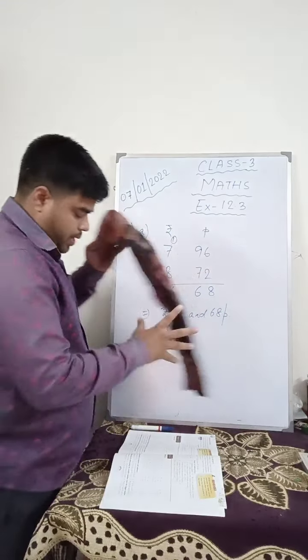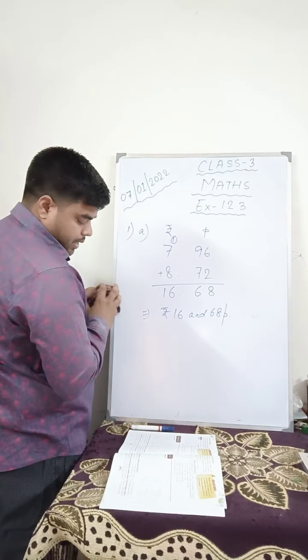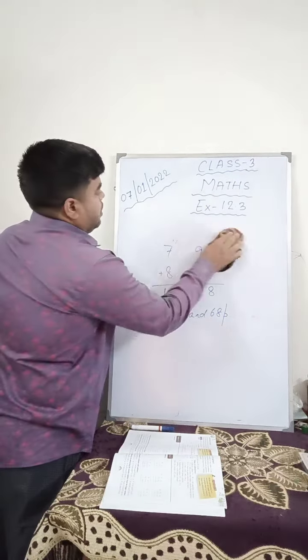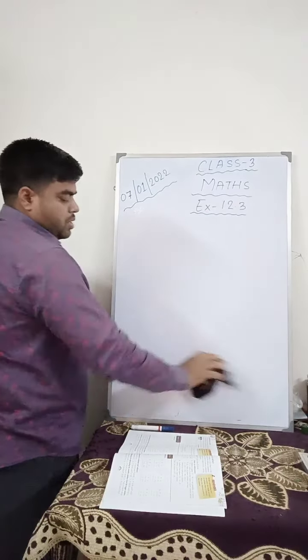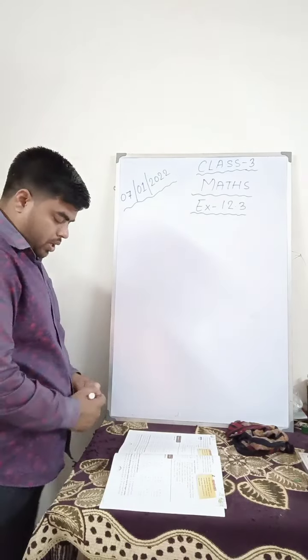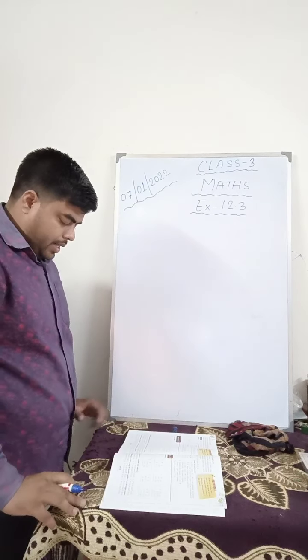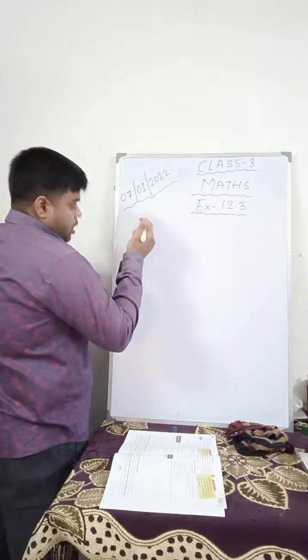Now let me show you question number 2. Add the following by writing the amount vertically in proper columns. In question number 1, they have arranged. You have to simply add. But in question number 2, they have not arranged. They have given you and asked you to add.